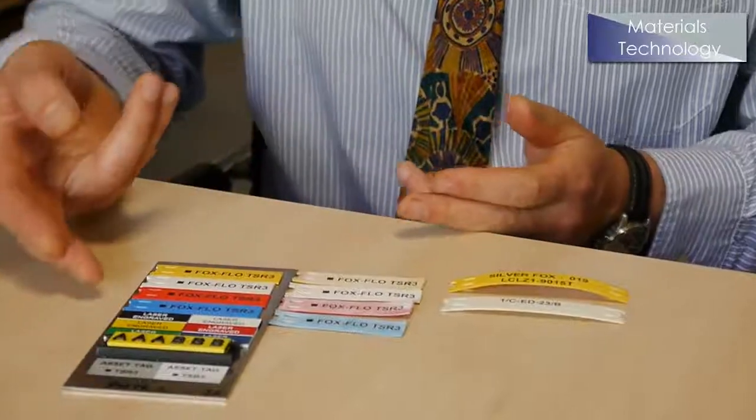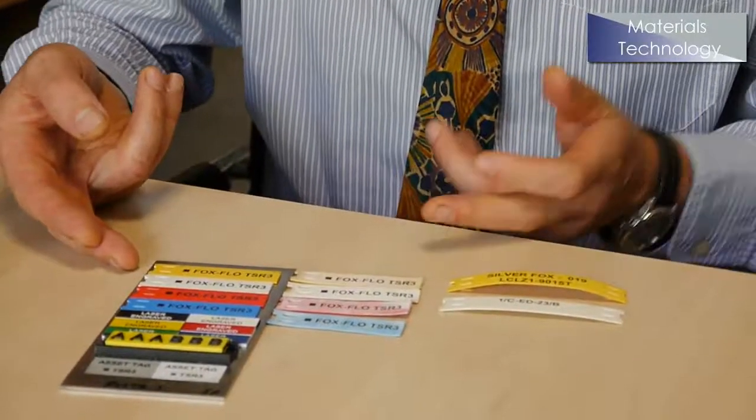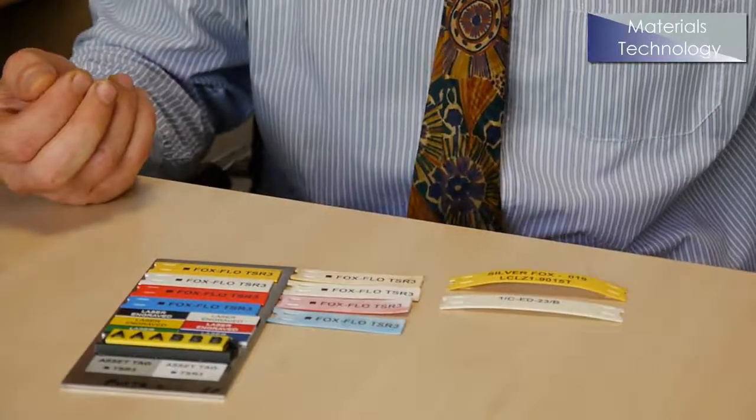As you can see on the plate here, we have examples of virgin labels, and we've got the weathered labels here.